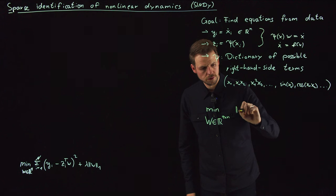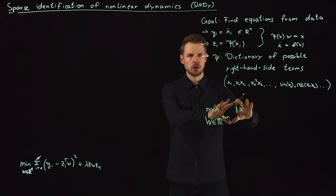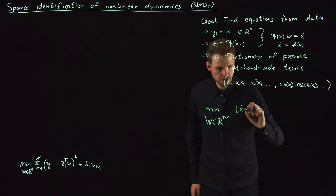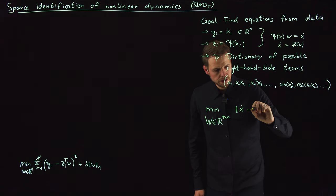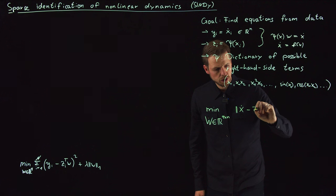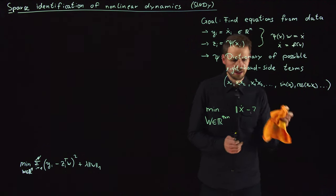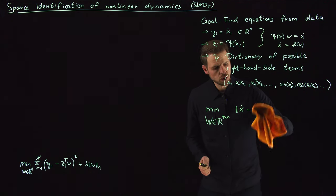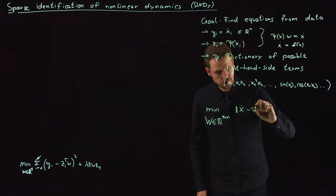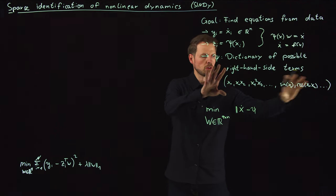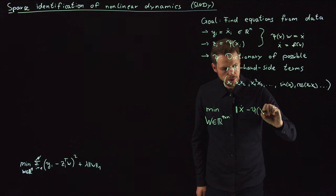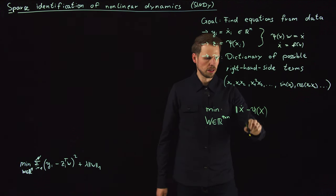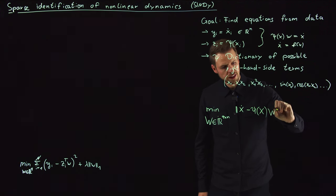What we're minimizing over is the output, which is the big X dot matrix, where we collect all the right-hand side data, minus the Z matrix, or let's just write it directly as it's supposed to be, this Psi, so lifting my input in terms of all these dictionary terms of, now, a matrix, so I've collected all the data here, times this W matrix.